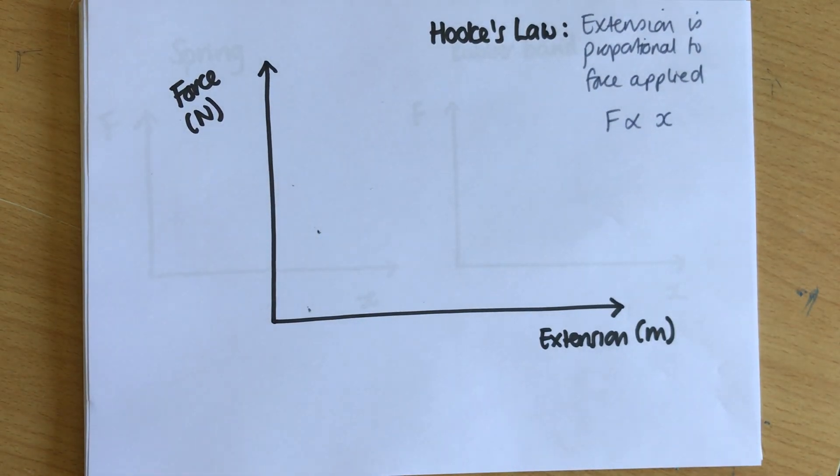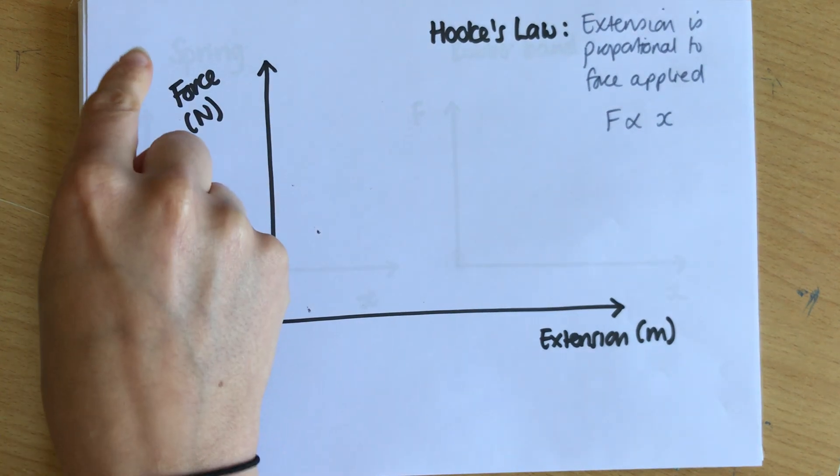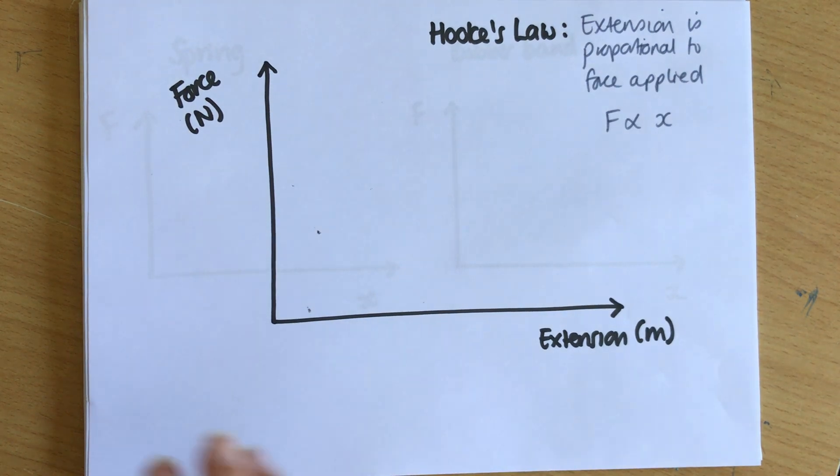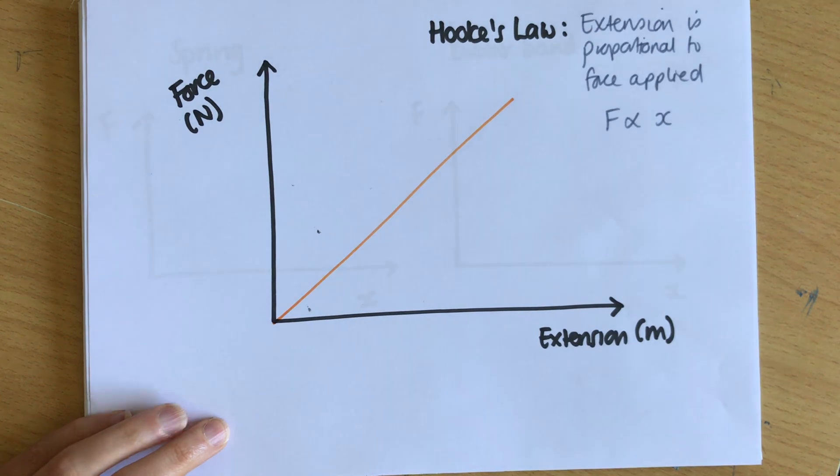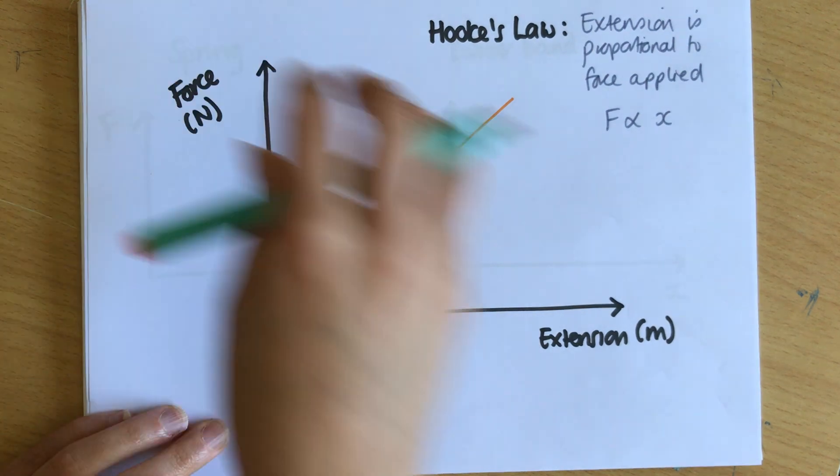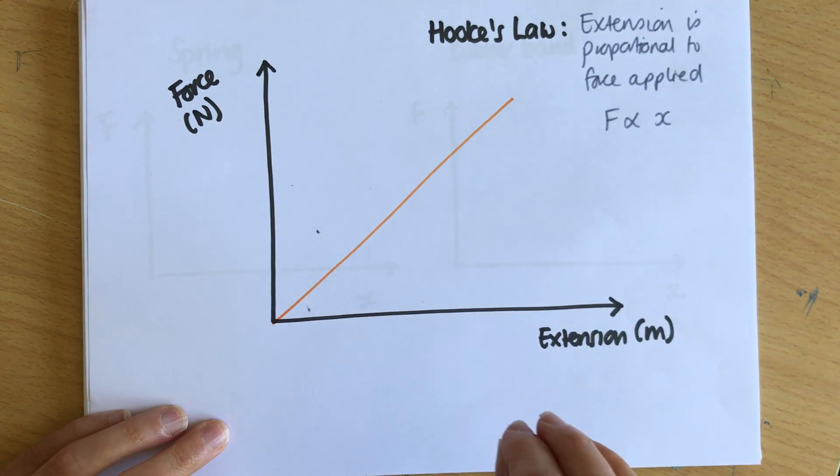If I want to show a proportionality on a graph, a graph of something where the y and x variables are proportional to each other should be a straight line through the origin. So a straight line graph shows that the y and x variables are proportional to each other.